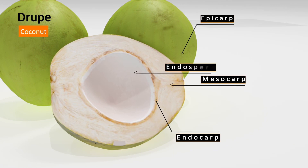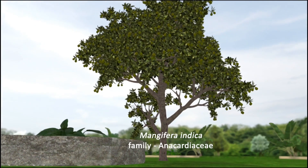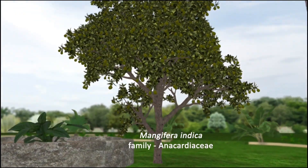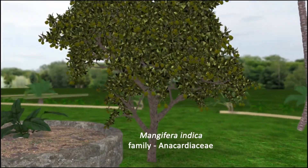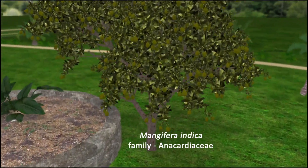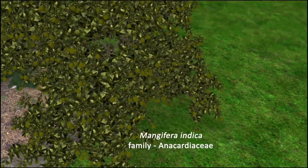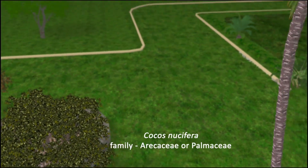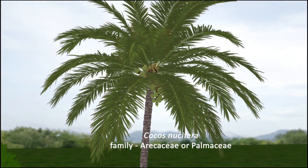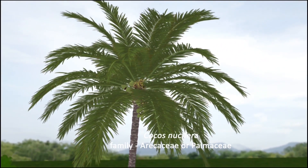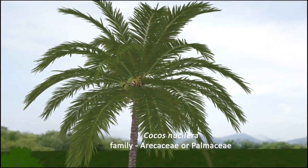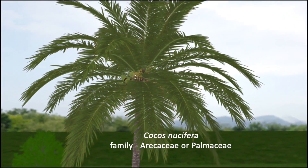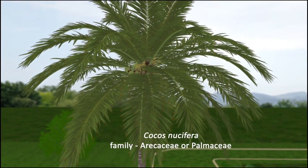In coconut, the endosperm is the chief edible part. Mangifera is a member of the family Anacardiaceae. Cocos nucifera is a member of the family Arecaceae (Palmaceae).